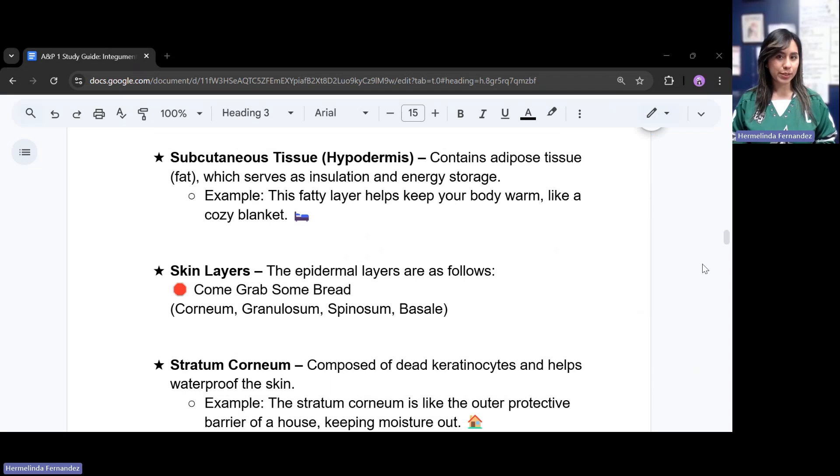Then we have our subcutaneous tissue. So this is the hypodermis. Hypo is low, below the dermis, below that dermal layer. This contains that adipose tissue. Adipose tissue, remember that's fat, which serves as insulation and energy storage. Think of the fatty layer being that part that keeps your body warm, like a cozy blanket.